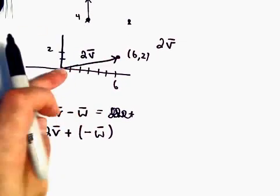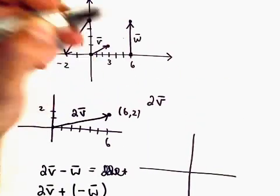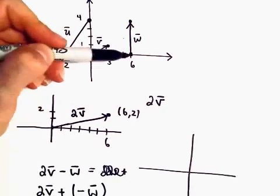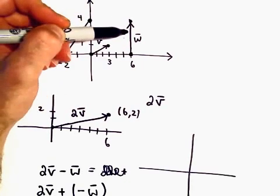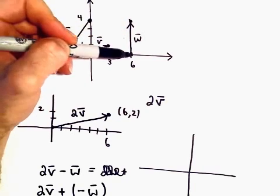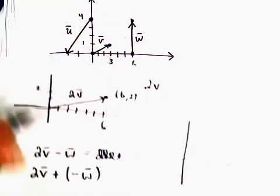We know what 2V looks like. It's right here. W, again, was a vector that, in the way I have it drawn here, starts at 6, 0 and goes to 6, 4. If you multiply it by a negative 1, all that does is it keeps the exact same length, but it's going to flip the direction.